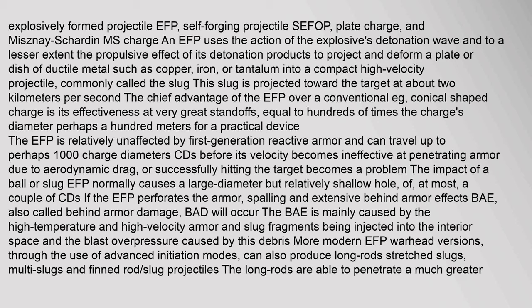The EFP can travel up to perhaps 1,000 charge diameters before its velocity becomes ineffective at penetrating armor due to aerodynamic drag. The impact of a ball or slug EFP normally causes a large-diameter but relatively shallow hole of at most a couple of charge diameters. If the EFP perforates the armor, extensive behind-armor effects (also called behind-armor damage, BAD) will occur, caused by high-temperature and high-velocity armor and slug fragments injected into the interior space and the blast overpressure caused by this debris. More modern EFP warhead versions, through the use of advanced initiation modes, can also produce long rods, multi-slugs, and finned rod slug projectiles.